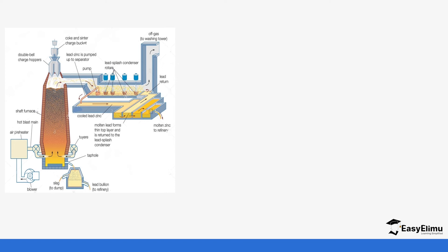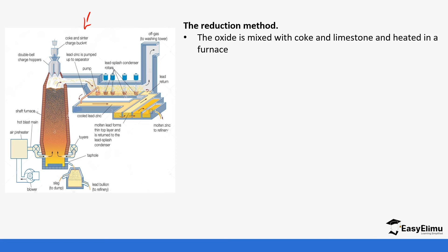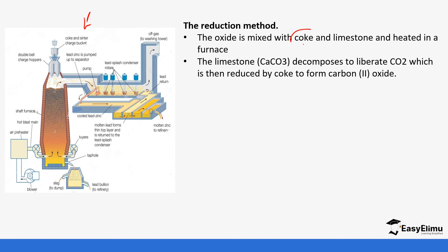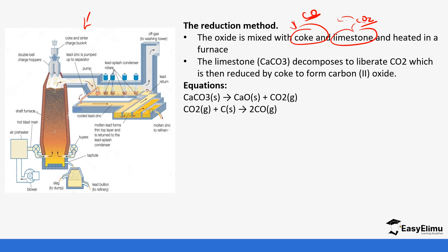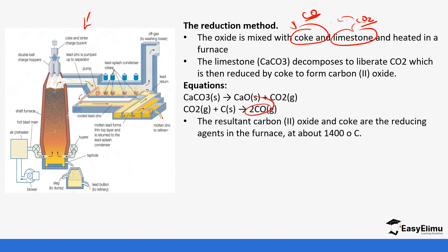For reduction, a blast furnace is used. The oxide is mixed with coke, which is the raw material — similar to the extraction of iron — because coke produces carbon monoxide, the main reducing agent. Limestone also produces carbon dioxide which reacts with coke to form carbon monoxide. Calcium carbonate is heated to form calcium oxide and carbon dioxide. The carbon monoxide and coke act as reducing agents, reducing the zinc oxide at around 1400 degrees Celsius.